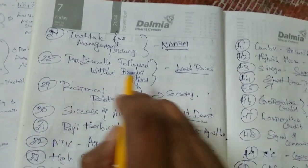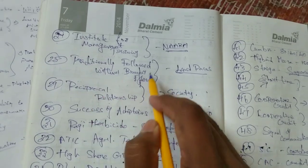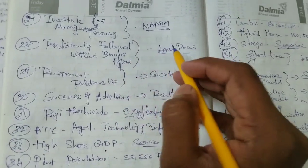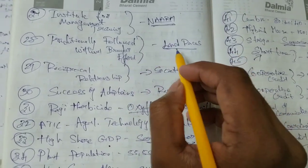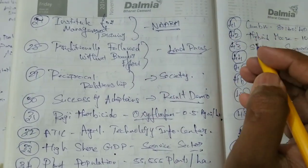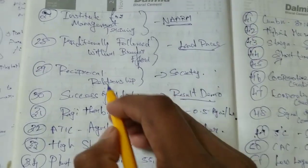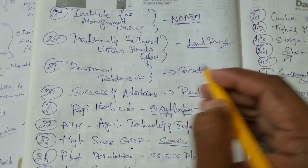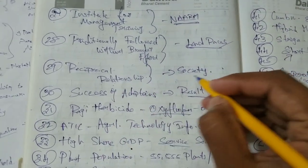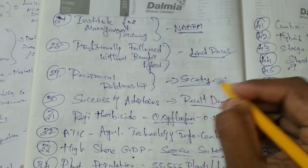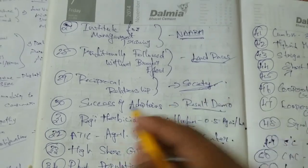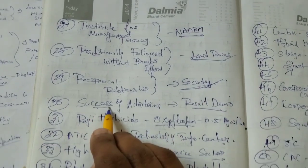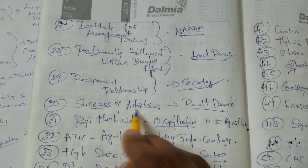Traditionally followed without breeder effect — breeder effect, traditionally followed land races. Reciprocal relationship communication. Society, technology success — adopt success.